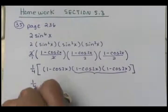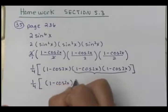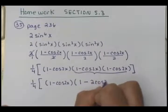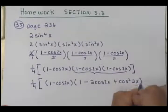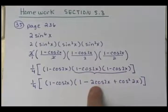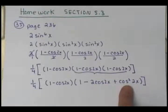So this would be 1 fourth times (1 minus cosine 2x). And if you fold this, you're going to get 1 minus 2 cosine 2x plus cosine squared of 2x — because you get a negative cosine 2x and another negative cosine 2x, which gives negative 2 cosine 2x. But uh-oh, I see a problem: I have a cosine squared, and I don't want any squares in here.